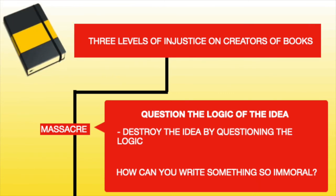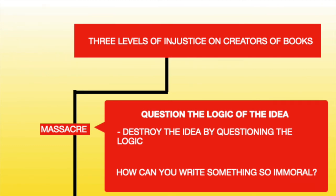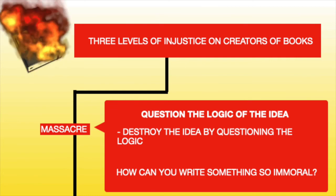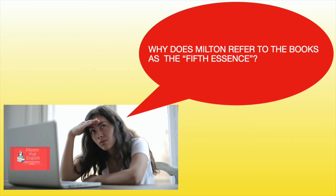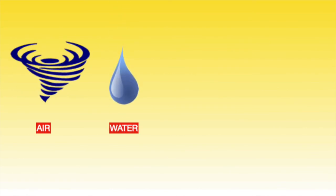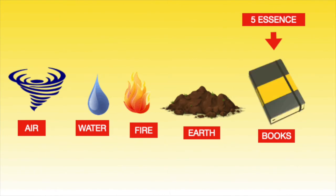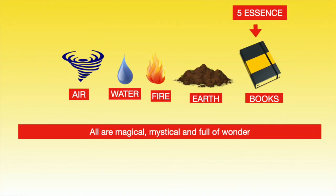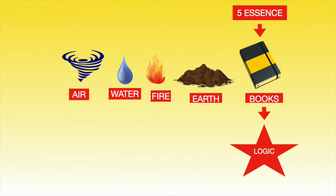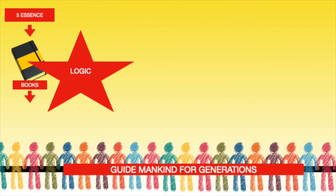Why does Milton refer to books as the fifth essence? The four important essences are air, water, fire, and earth. Milton refers to books as the fifth essence because they are magical, mystical, and full of wonder. When we destroy a book, we are destroying something immortal — books are preserved for generations till eternity. So we are not just killing the person who created the book, but destroying the logic and reason within it that would have guided mankind for generations.